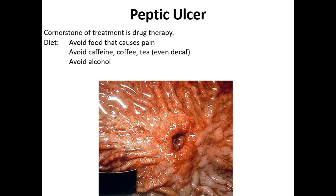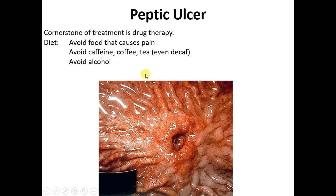The ulcer diet is rather simple. In the past, it was suggested to drink lots of milky, creamy things every couple of hours — we now know that only made things worse, because every time you put something in your stomach, it secretes acid. It's much better to eat your standard three meals, avoid the foods that cause pain, avoid things containing caffeine or other irritants in coffee and tea, and avoid alcohol.